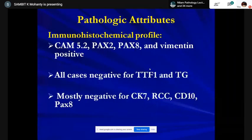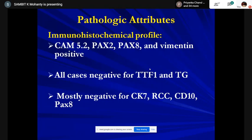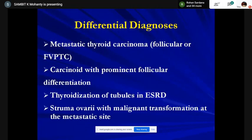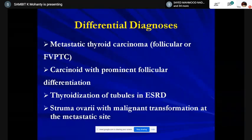I would say don't waste money doing PAX8 when thyroid is a differential, because thyroid is also positive for PAX8. PAX2 is fairly specific for renal and metanephric tumors — though nothing in immunohistochemistry is completely specific. They are negative for TTF1 and thyroglobulin, mostly negative for CK7, RCC, CD10, and PAX8 can be a plus/minus. Differentials include carcinoid with prominent follicular differentiation, thyroidization of tubules in chronic pyelonephritis/end-stage renal disease, struma ovarii with malignant transformation, and metastatic thyroid carcinoma.